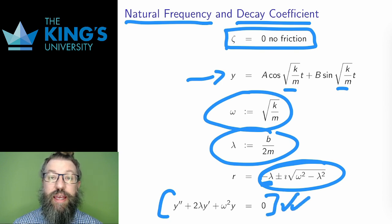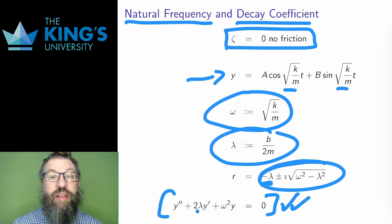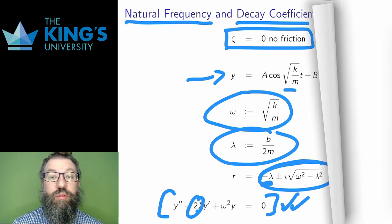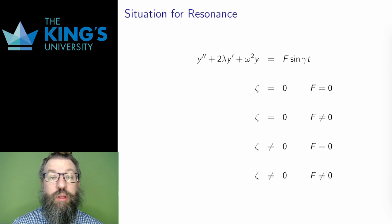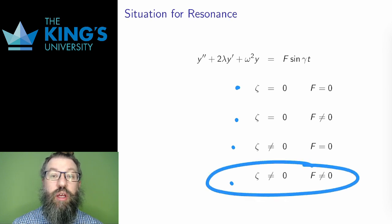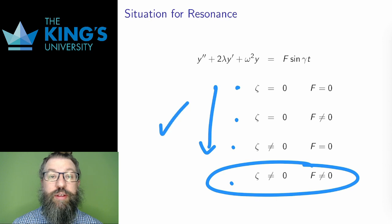Remember, lambda is the decay coefficient, so it makes sense that it replaced friction, which is the source of the decay. And omega is the natural frequency, which is the balance between the mass and the spring constant. I'll use this form for the rest of the video, and I'll work through four cases, with and without friction, and with and without forcing. The ultimate conclusion about resonance is in the last case, but working through the intermediate cases helps me understand what's going on in the last case.